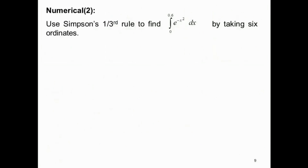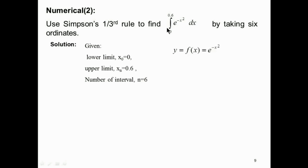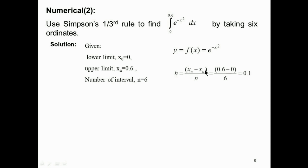Now let us take the second numerical. Use Simpson's 1/3 rule to find the integral from 0 to 0.6 of e^(−x²) dx, taking 6 ordinates. From the given data: x0 = 0 (lower limit), xn = 0.6 (upper limit), n = 6 strips, and y = f(x) = e^(−x²). Strip size h = (0.6 − 0)/6 = 0.1.